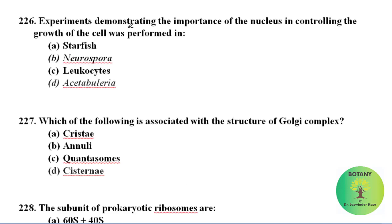Experiments demonstrating the importance of the nucleus in controlling the growth of the cell were performed in Acetabularia, which is a single-cell green algae. These experiments were done by Dr. J. Hammerling in 1943.